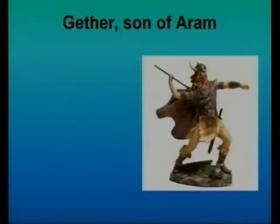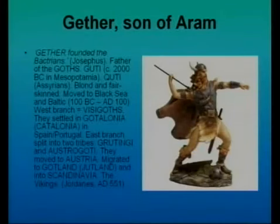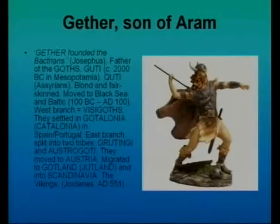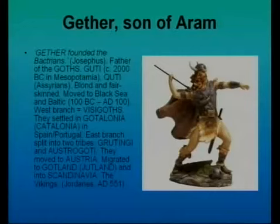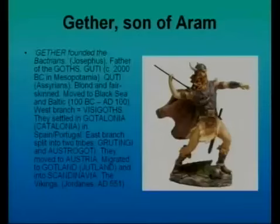Getha was the father of the Vikings. Getha founded the Bactrians according to Josephus, but he was known as the father of the Goths or the Guti — recorded in clay tablets about 2000 BC — described as blonde and fair-skinned. They moved to the Black Sea and the Baltic. A west branch became known as the Visigoths and settled in Gotolonia, which became known as Catalonia in Spain and Portugal. The east branch split into two tribes — the Gratingi and the Ostrogoti — and moved to what we now call Austria. Some migrated to Gotland, which became known as Jutland and into Scandinavia. So there we get the Vikings. If you want to trace that further, dig into Jordanes, who was a Gothic historian in the 6th century AD.